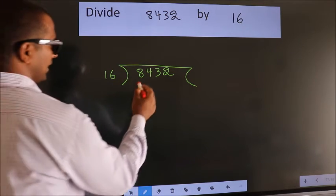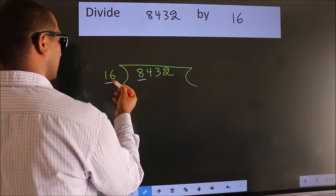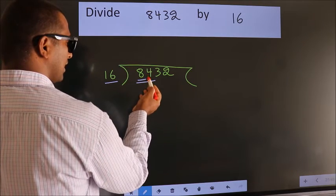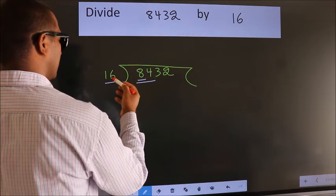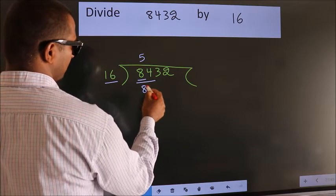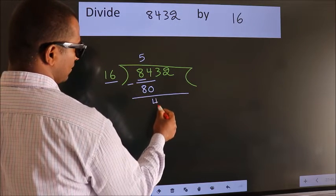Here we have 8. Here 16. 8 is smaller than 16, so we should take 2 numbers: 84. A number close to 84 in the 16 table is 16 times 5 equals 80. Now we should subtract. We get 4.